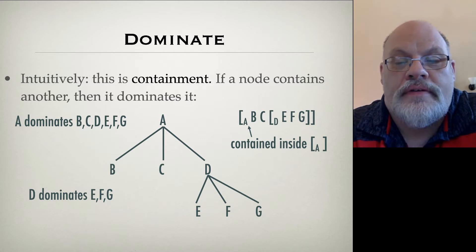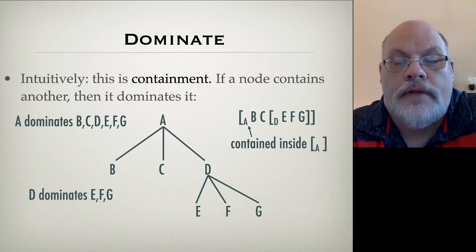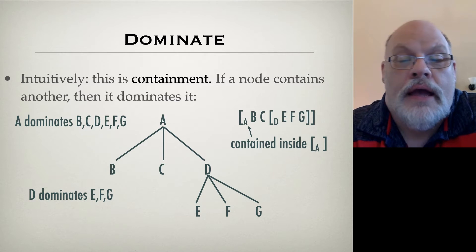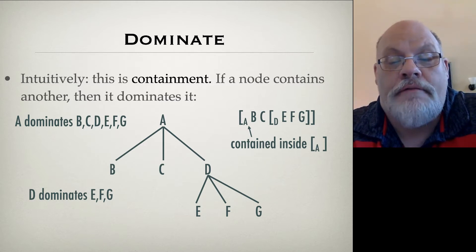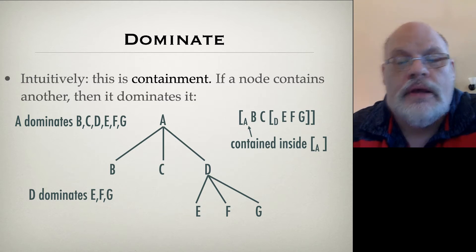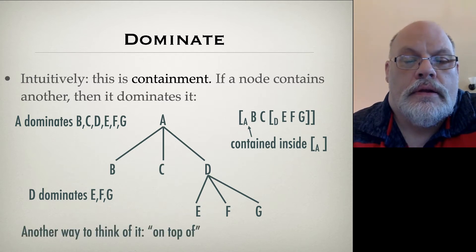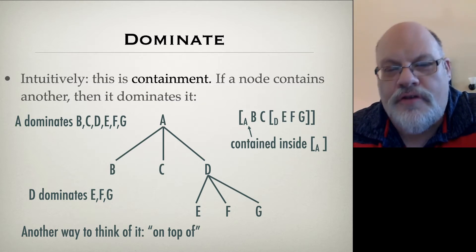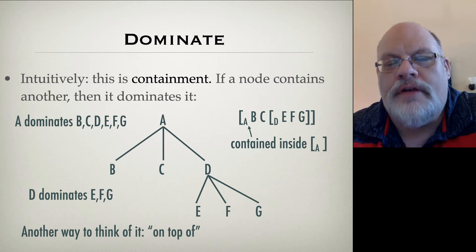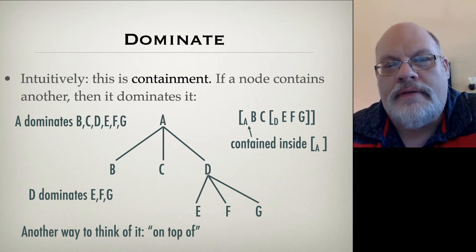Notice that this dominance relationship is both local and long distance. For example, A dominates D, and as a consequence, A also dominates F, G, and E. Another way to think about this is 'on top of': within the tree structure, if some node is on top of a branch that connects to another node, then it dominates it.